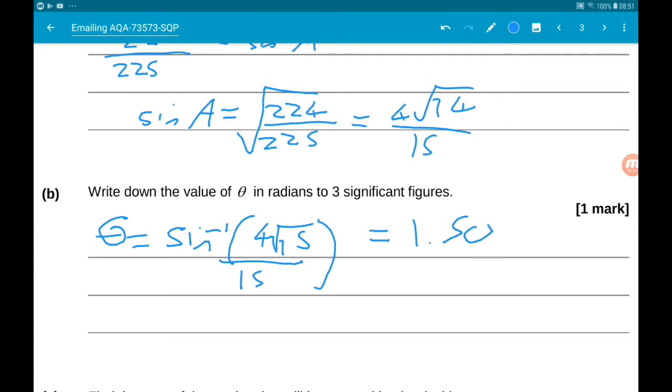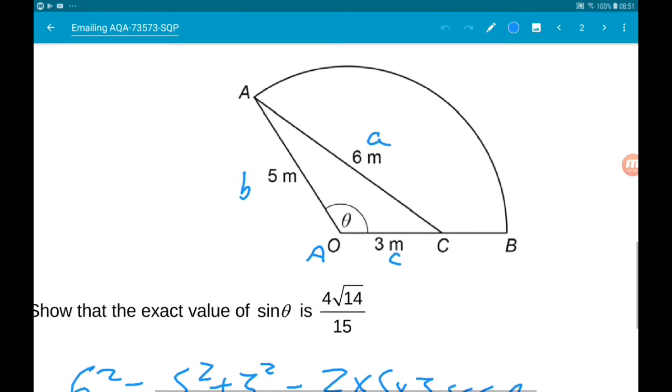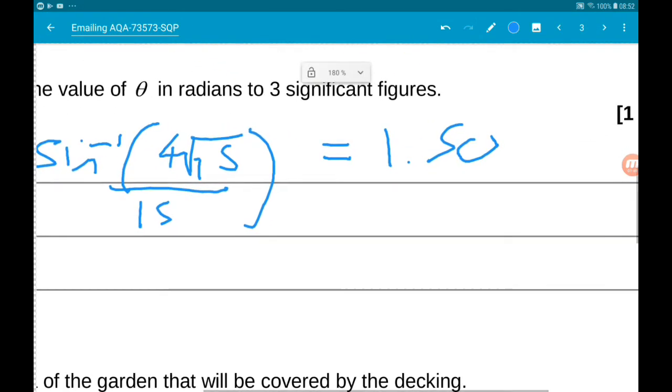But that isn't right. Remember theta is an obtuse angle. Even though these drawings are never drawn accurately, you can at least take it that that angle is obtuse. So the value of theta will be obtuse. So we actually want the second solution.